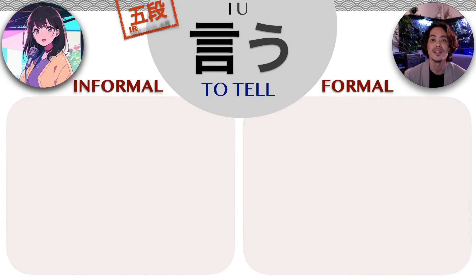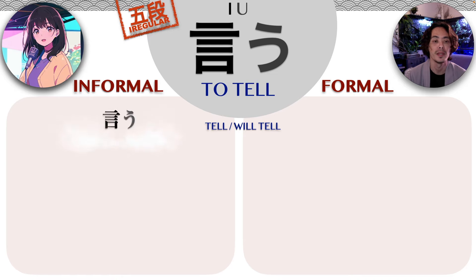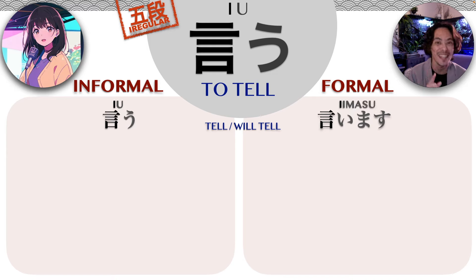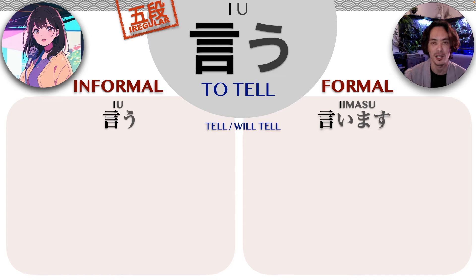The Japanese verb iu is an irregular verb. The present and future tense in the informal way is iu, which is also the dictionary form. And the formal way is iimasu. Remember that there are two i sounds, so you basically just extend the sound: iimasu. So iu / iimasu.